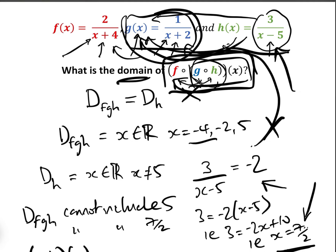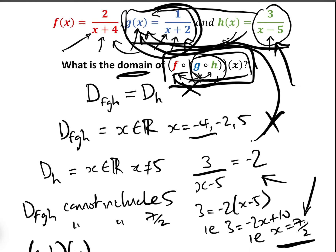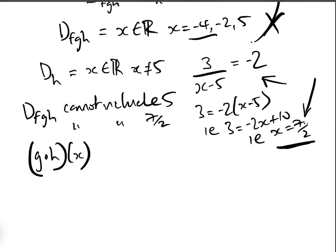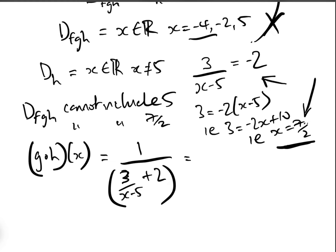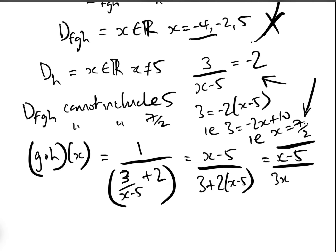g∘h(x): h(x) is three over (x minus five), and g(x) is one over (x plus two). So g∘h is putting h into g, which is one over (three over (x minus five)) plus two. Multiplying top and bottom by (x minus five) gives (x minus five) over three plus two times (x minus five).